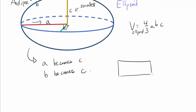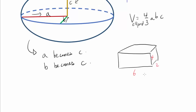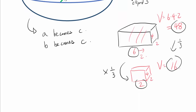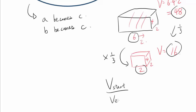Let's think about how each transformation changes the volume. Draw a box with length, width, and height of 6, 2, and 4. If we push 6 until it becomes 2 — while 4 stays the same — the volume at the start is 6 times 4 times 2, or 48. The volume at the end is 2 times 4 times 2, or 16. When we reduce 6 by a factor of one-third, the volume is also multiplied by one-third. So in three-dimensional space: volume at the start over volume at the end equals the length at the start over the length at the end — comparing volume to length rather than area to length.